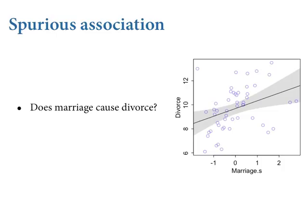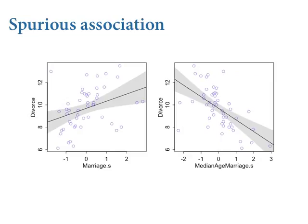This is almost certainly spurious. The alternative explanatory variable is the median age of marriage in different states. Both variables are associated with the divorce rate in different directions. Places where people get married at a higher rate are positively associated with divorce. It's negatively associated with the median age of marriage. States far on the right are where people get married late, and in those states there's a lot less divorce. The divorce rate is per 10,000 population, standardized to the state's population.